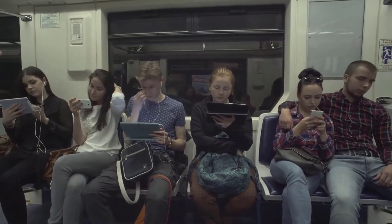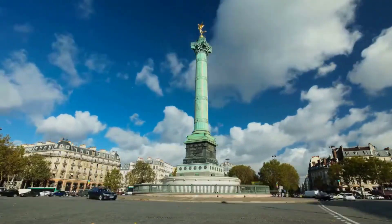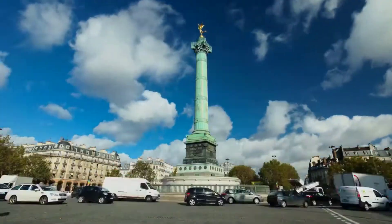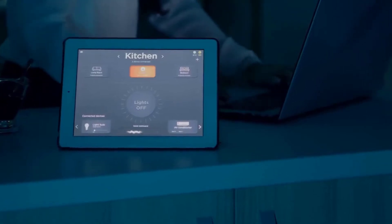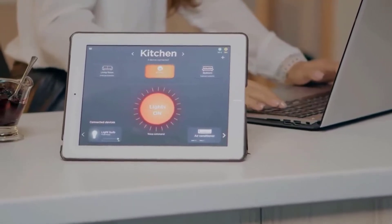This increase in connected devices is giving rise to the connected home, where various devices are all linked up and can be controlled and monitored from a single central point. This can be done in a number of ways, such as through a dedicated home automation system, a mobile app, or even through voice commands. There are a number of benefits that come with a connected home.